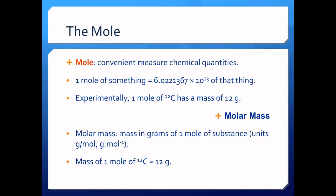Now we go to the mole. When we use the balanced chemical reaction, we have what we call a mole-to-mole relationship. It's very important that we define the mole. The mole is a convenient measure of chemical quantities. One mole of something is 6.02 × 10²³ of that thing. One mole of something could be anything — atoms, ions, or molecules — and it's always 6.02 × 10²³ of that thing.